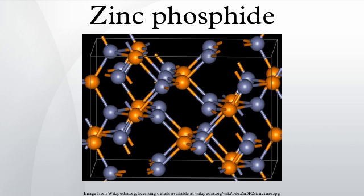In New Zealand, the Environmental Protection Authority has approved the import and manufacture of microcapsulated zinc phosphide for the ground control of possums. The application was made by Pestec Ltd with support from Connovation Ltd, Lincoln University, and the Animal Health Board. It will be used as an additional vertebrate poison in certain situations. Unlike 1080 poison, it cannot be used for aerial application.